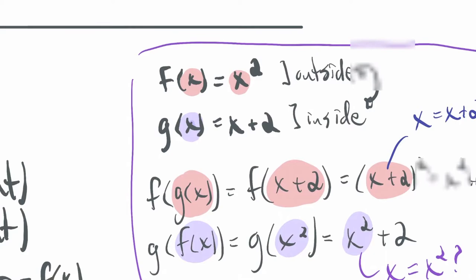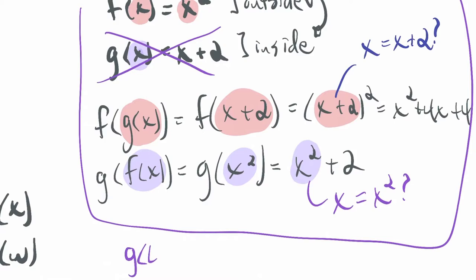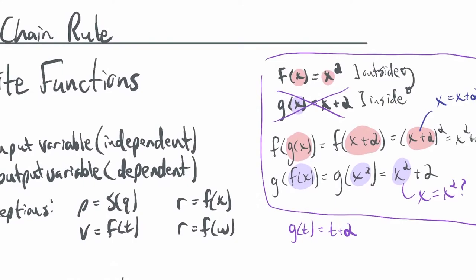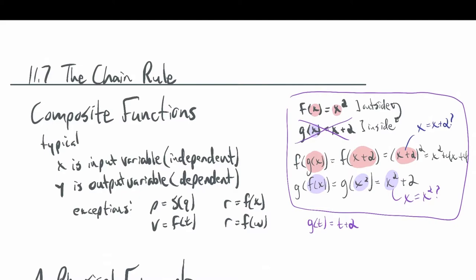What might be easier is to say, instead of calling it g of x, call it g of t equals t plus 2 — use a different letter for the input. That's a brief review of composite functions and the issues surrounding them. The chain rule is how you handle derivatives of composite functions, and I'll try to avoid using x for more than one thing.